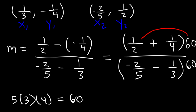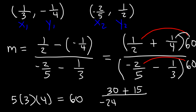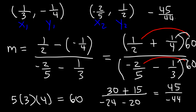Let's multiply the top and bottom by 60. 60 times 1/2 is 30. 60 divided by 4 is 15. Negative 2/5 of 60: 60 divided by 5 is 12, and 12 times negative 2 is negative 24. One third of 60 is 20. 30 plus 15 is 45. Negative 24 minus 20 is negative 44. So the answer is negative 45 divided by 44.